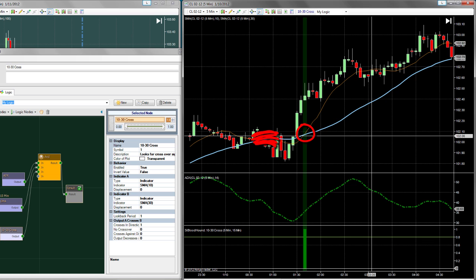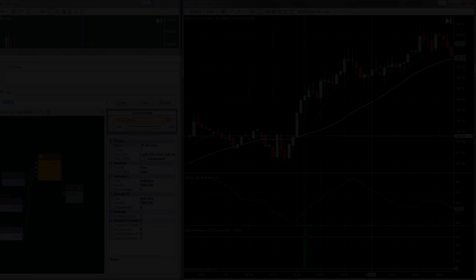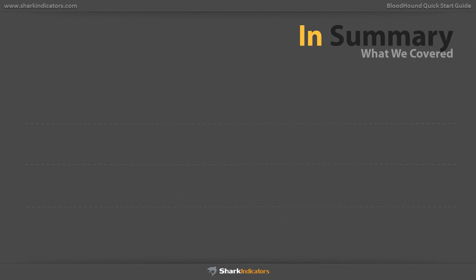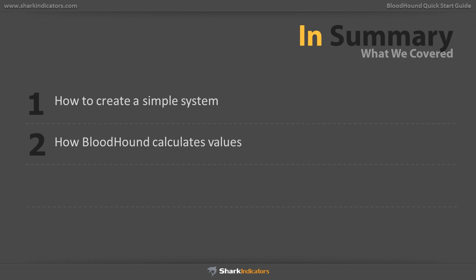If you recall, these were our original system rules. This concludes the Quick Start Guide, and I hope you got a taste of what's possible using Bloodhound. In summary, you learned how to create a simple system based on a 10-30 simple moving average crossover, how Bloodhound calculates its values, and you got an introduction to the logic templating system. However, what you've seen only begins to scratch the surface.